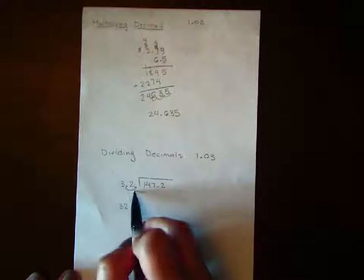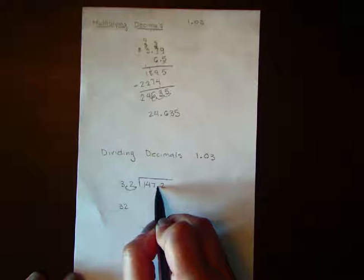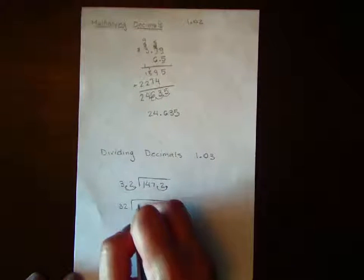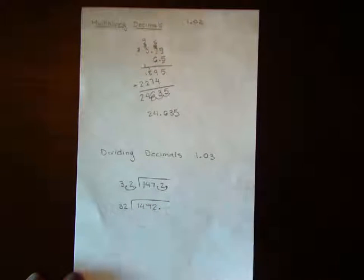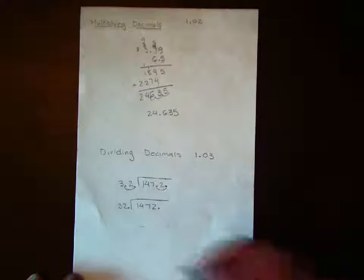However many times you move the decimal place here, you have to do it here as well. So I'm going to move it one place here. So this number now becomes 1,472, because your decimal point is now after the 2 in both numbers. And then you just divide like we always have.